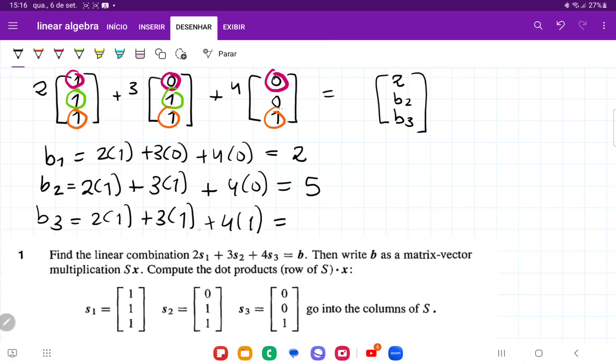So we have 2 times 1 plus 3 times 1 plus 4 times 1, which gives us 9. So our vector b is going to be the vector (2, 5, 9).